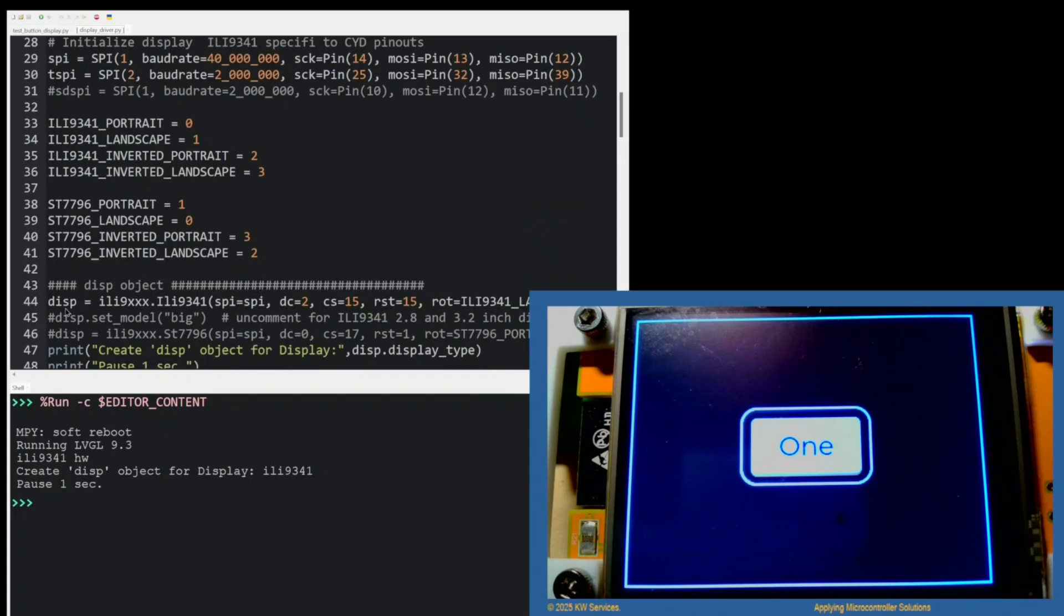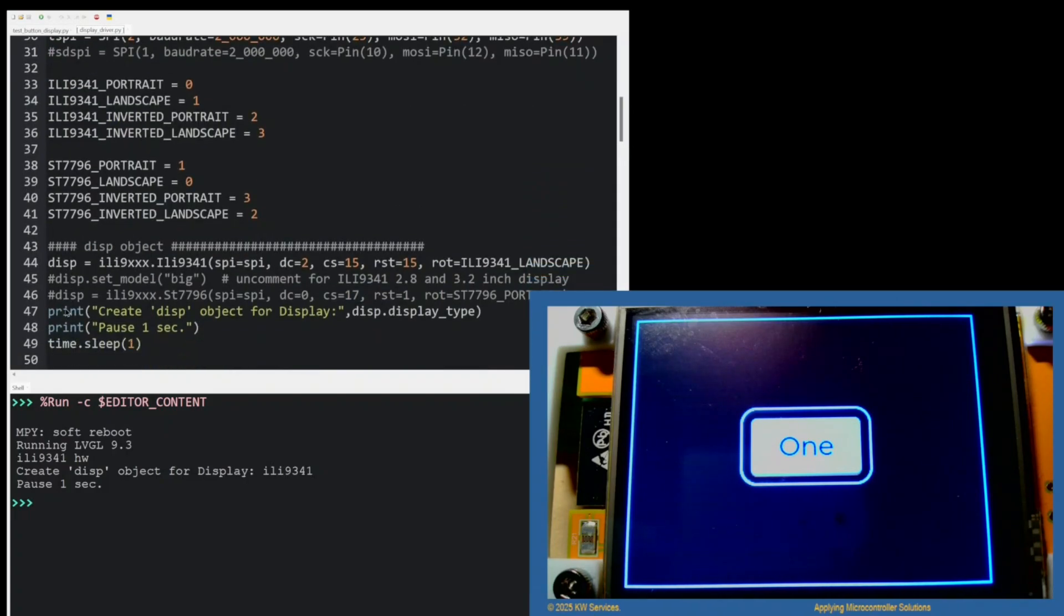The next thing you need to worry about is the display object. Here, for the display object, we can take the default and we use DC is 2, the CS is 15. And notice the reset is also 15. So, that's important.